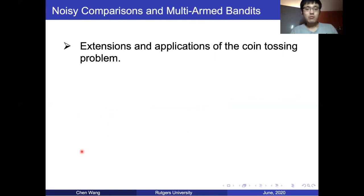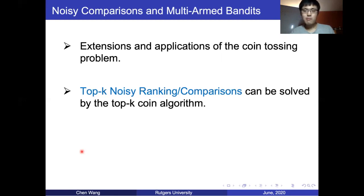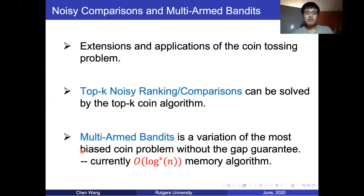We also extend our algorithms to noisy comparison and multi-armed bandits. For noisy comparison, the problem is defined as ranking the top-k items, but when querying the rank between a pair, with some probability we get the wrong answer. Usually algorithms for coin tossing, multi-armed bandits, and noisy comparison are not exchangeable — but surprisingly, our coin tossing algorithm can solve noisy comparisons. For multi-armed bandits, which is a variation of the coin tossing model, it is a little more difficult because there are no gap guarantees. Currently we have an O(log* n) memory algorithm and are working towards a one-memory algorithm.